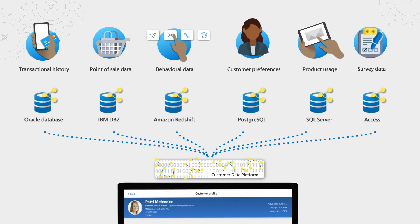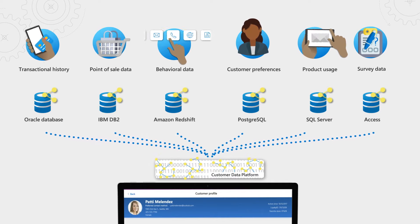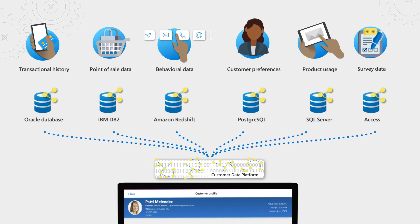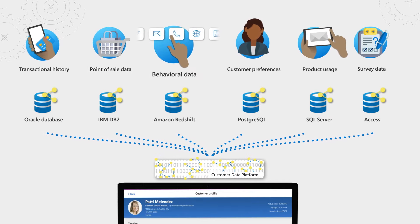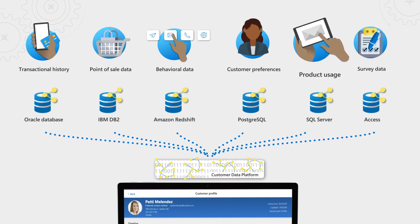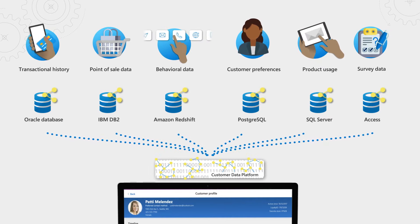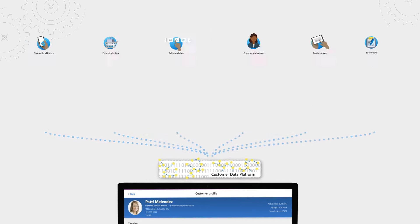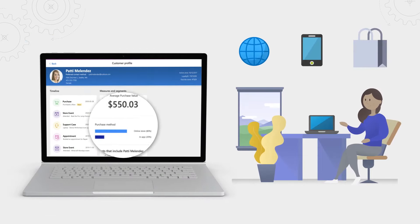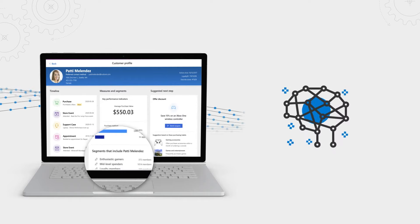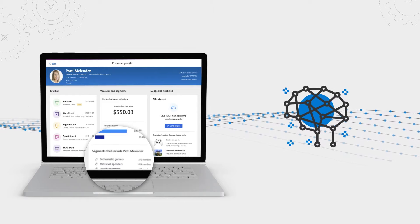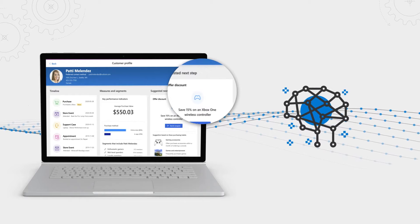We start by allowing customers to bring in data using our pre-built connectors and all types of data. For example, things like transaction history, point of sale data, behavioral data, customer preferences, product usage, and even survey data. We also understand how customers are interacting with you — be it through your online website, your mobile application, or even an in-store interaction. On top of all of that, you can enrich your customer information with anonymized information from the Microsoft Graph at an aggregate level or third-party sources, such as brand and different interests.